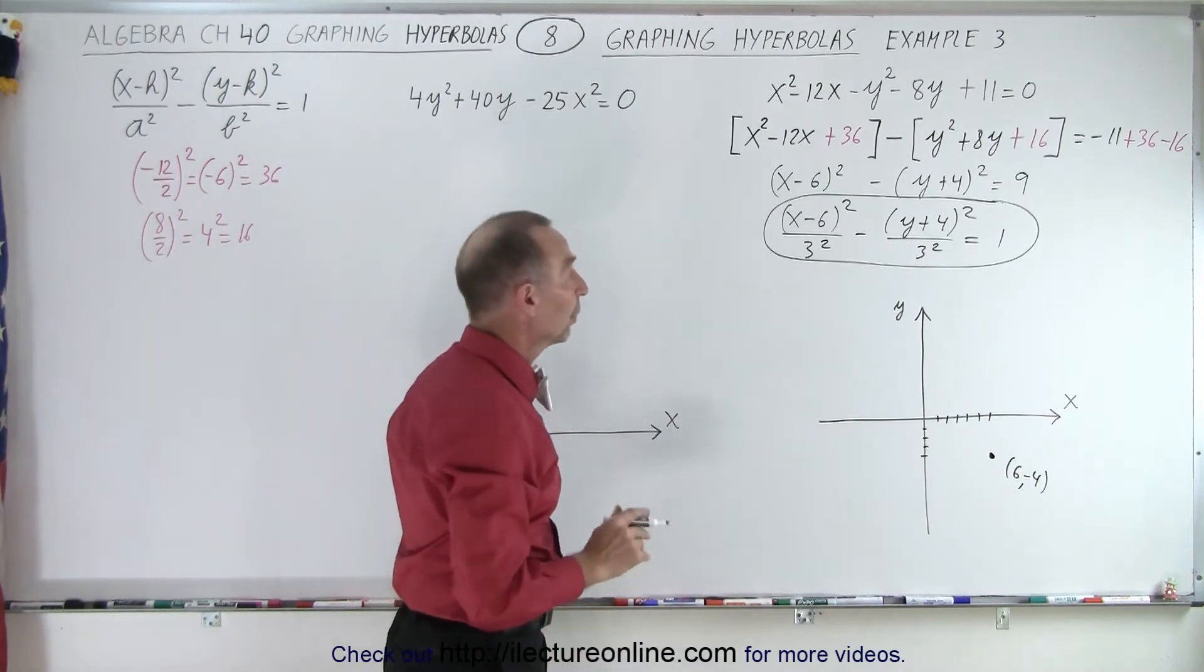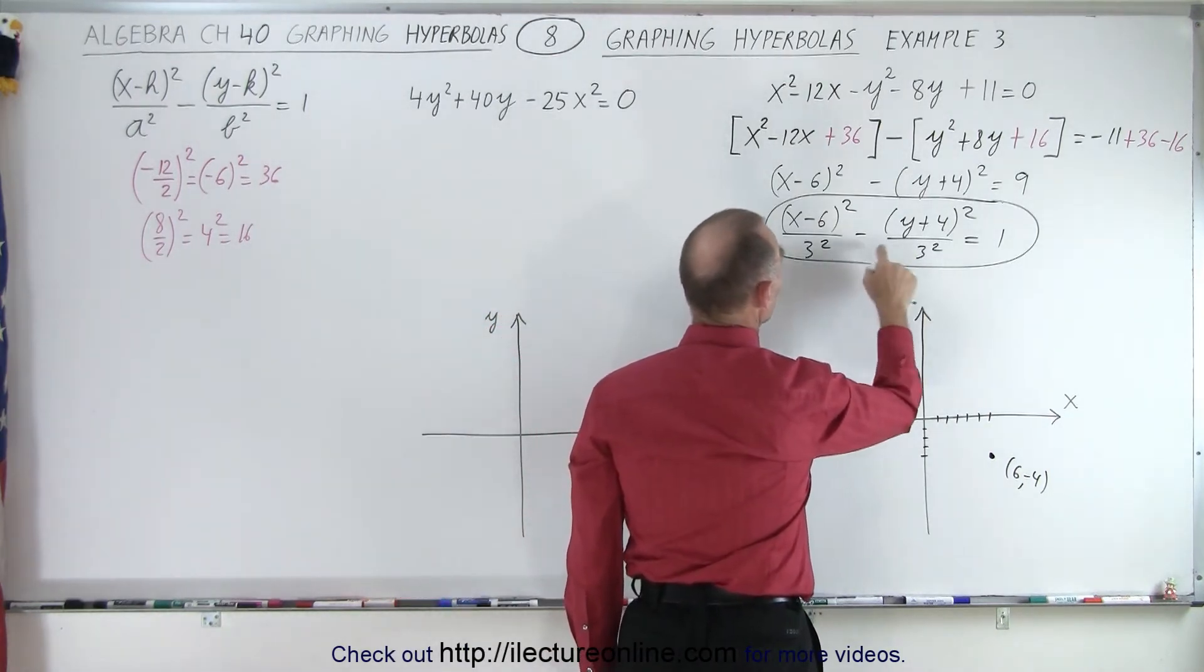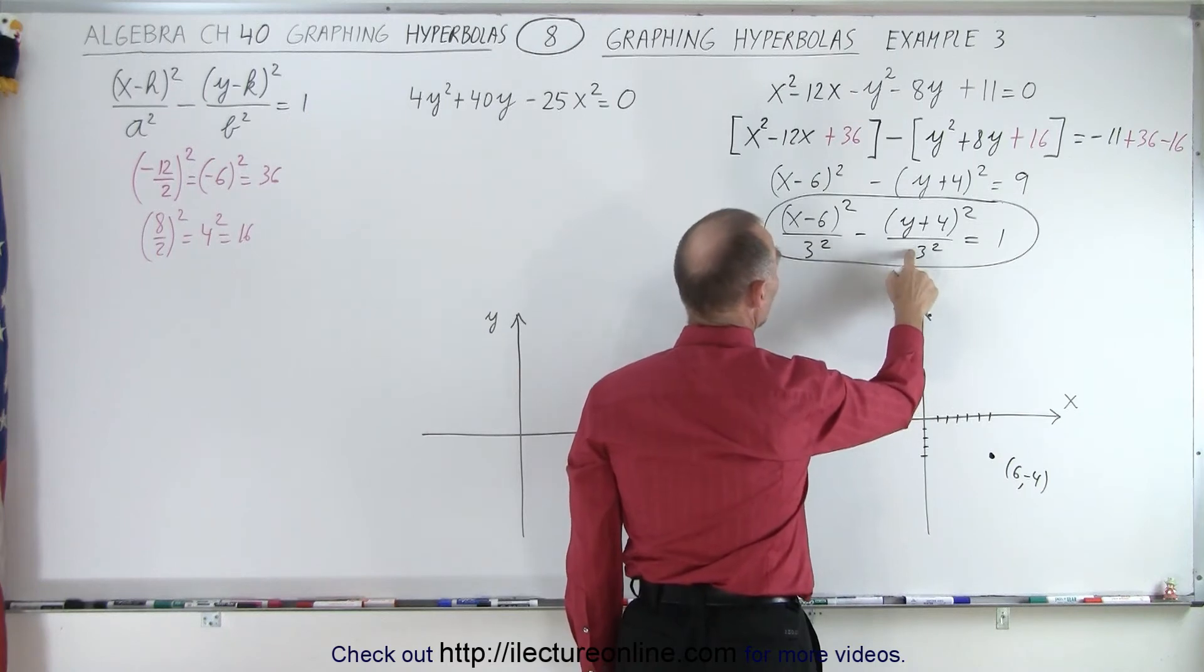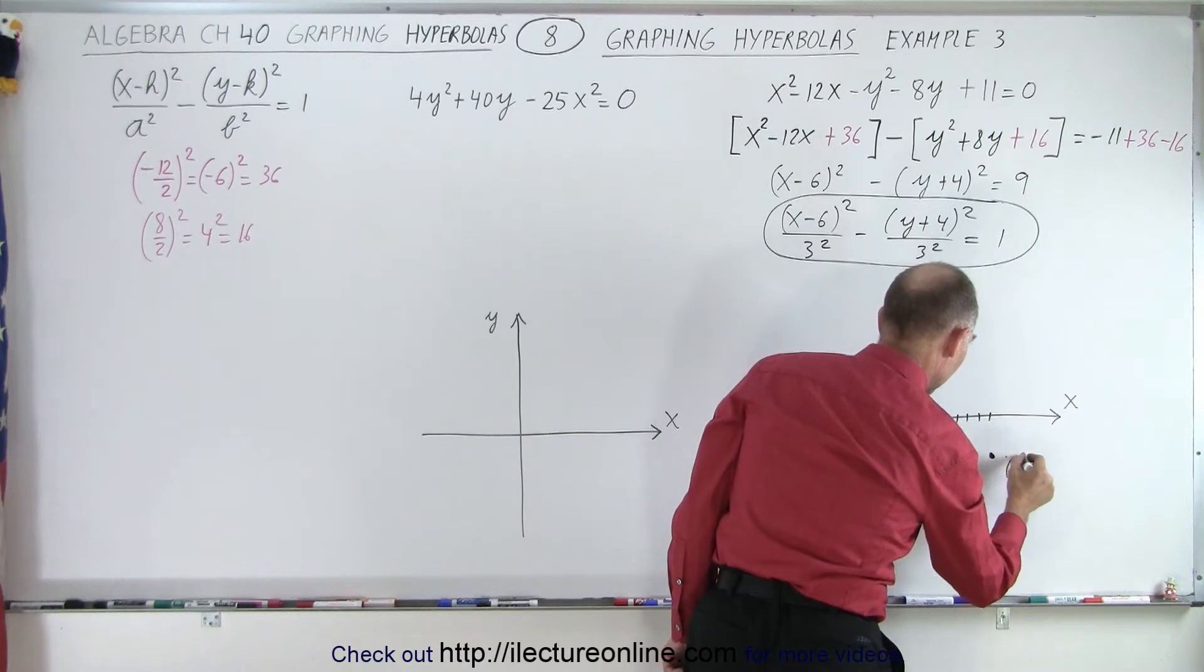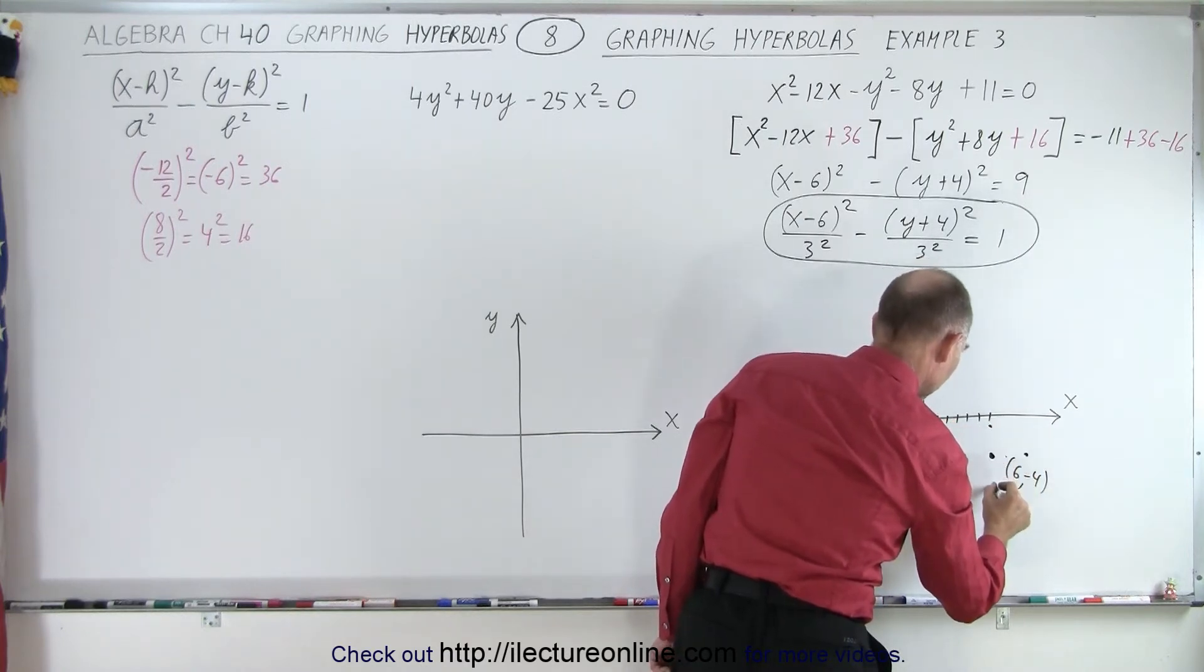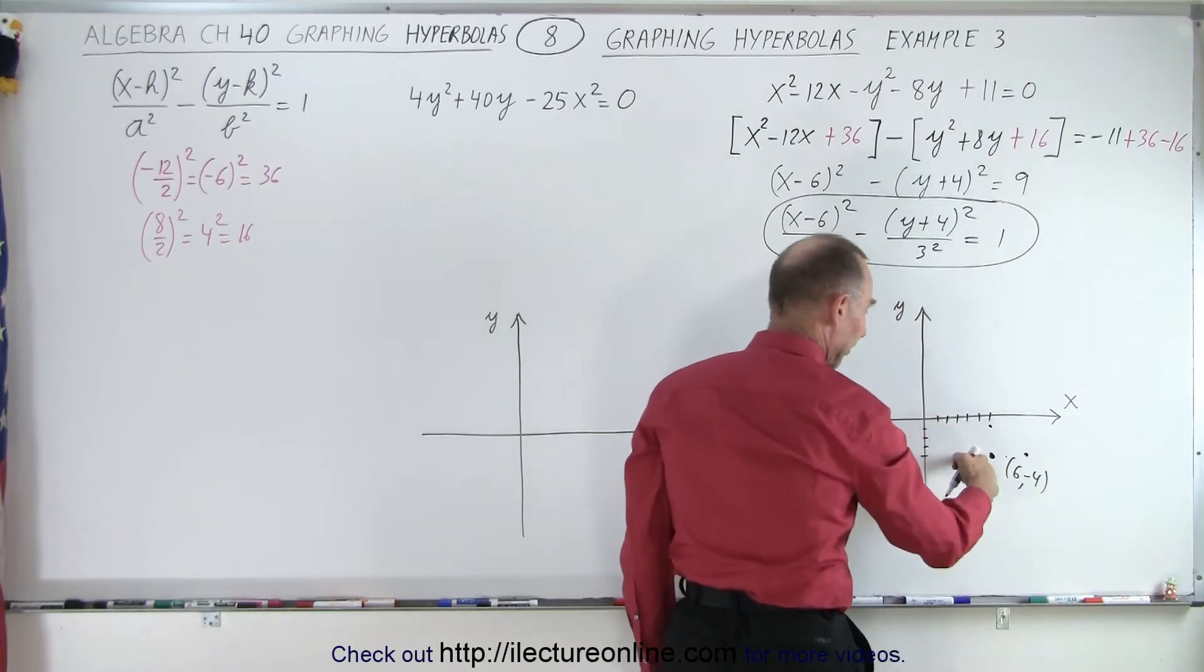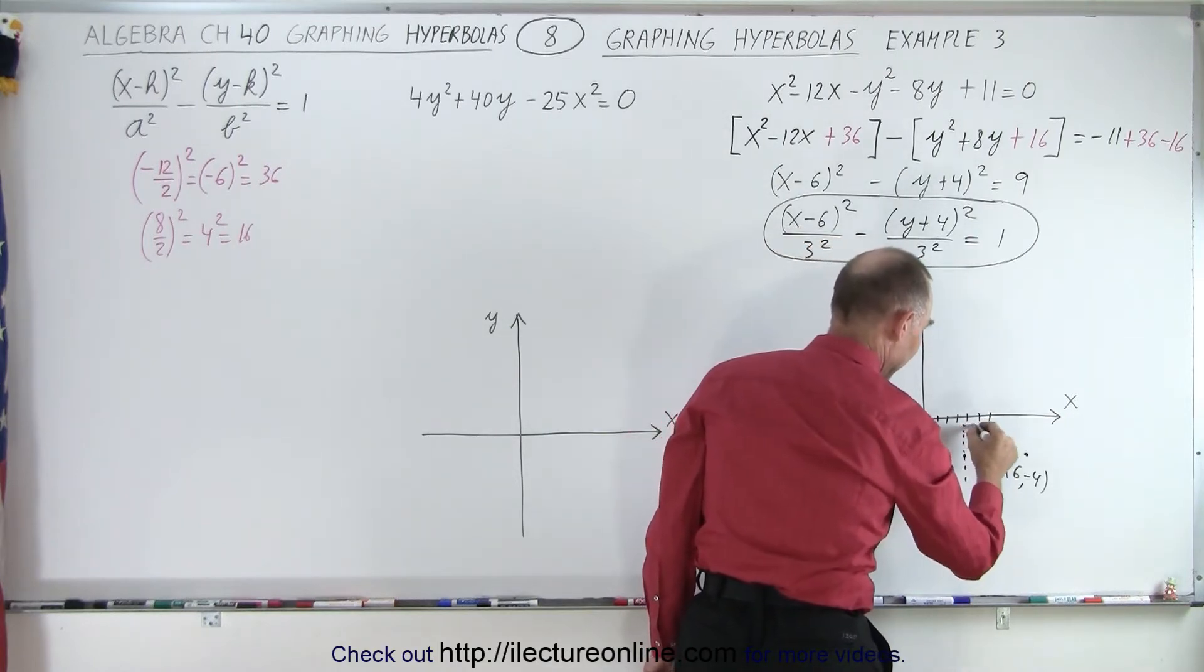Now we need a box. And we know that in the x and the y direction, we're going to move 3 to the left, 3 to the right, 3 up and 3 down. That gives us a nice box like this.